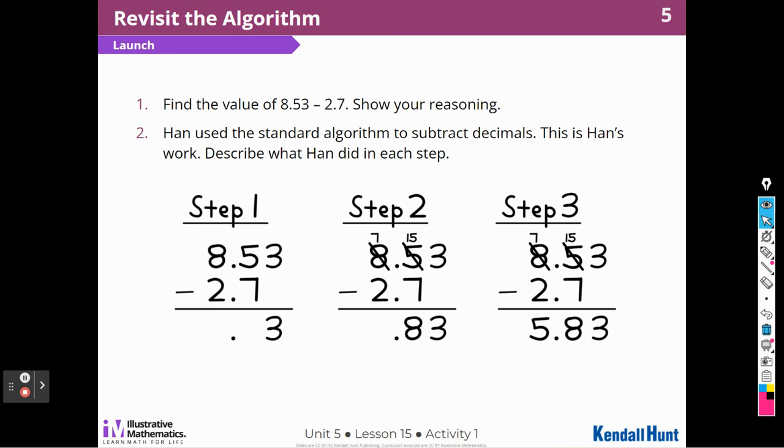Let's move on. Find the value of 8 and 53 hundredths minus 2 and 7 tenths. Hahn used the standard algorithm to subtract decimals. This is Hahn's work. So, Hahn did a great job. When I look at Hahn's work, Hahn did a great job of lining up his decimals, right? And he imagines that there's a 0 here, and he says 3 minus 0 is 3.